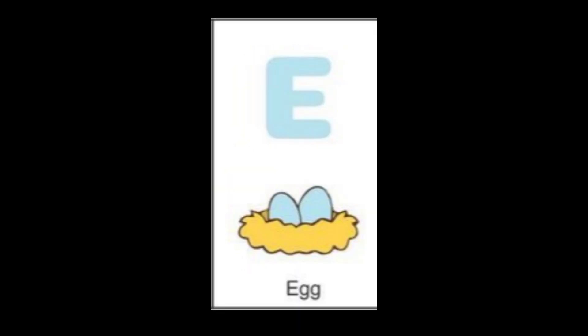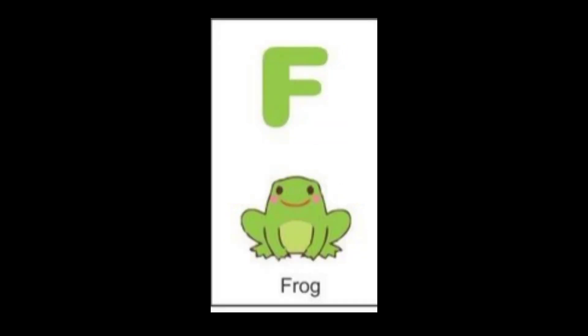The next letter is E. E for egg. The color of egg is blue. The next letter is F. F for frog. The color of frog is green.